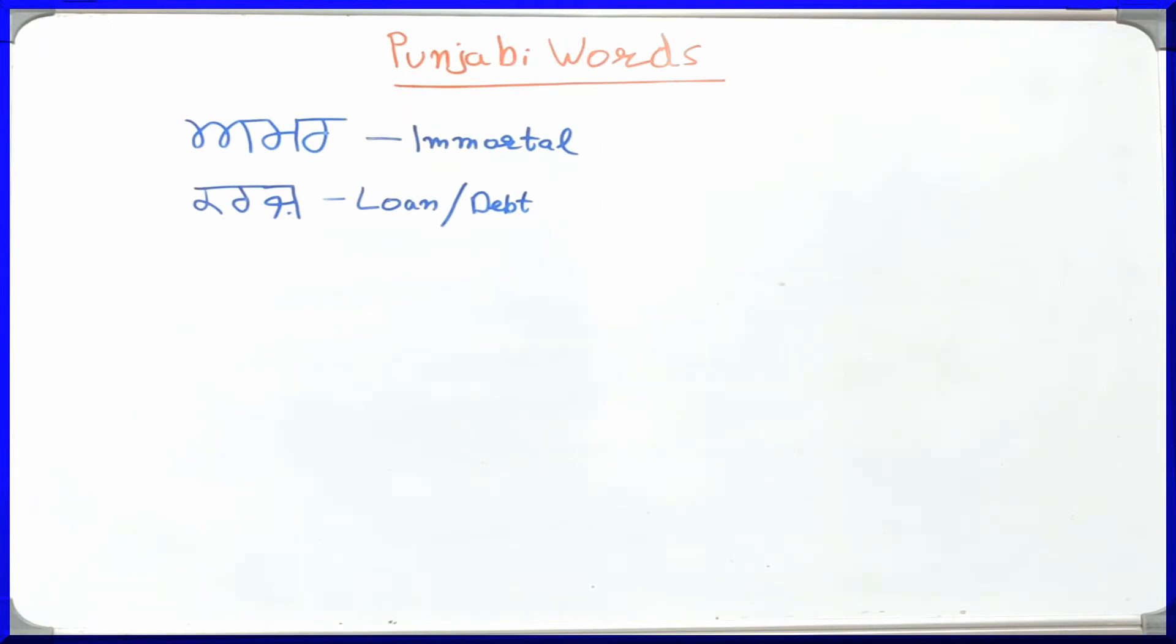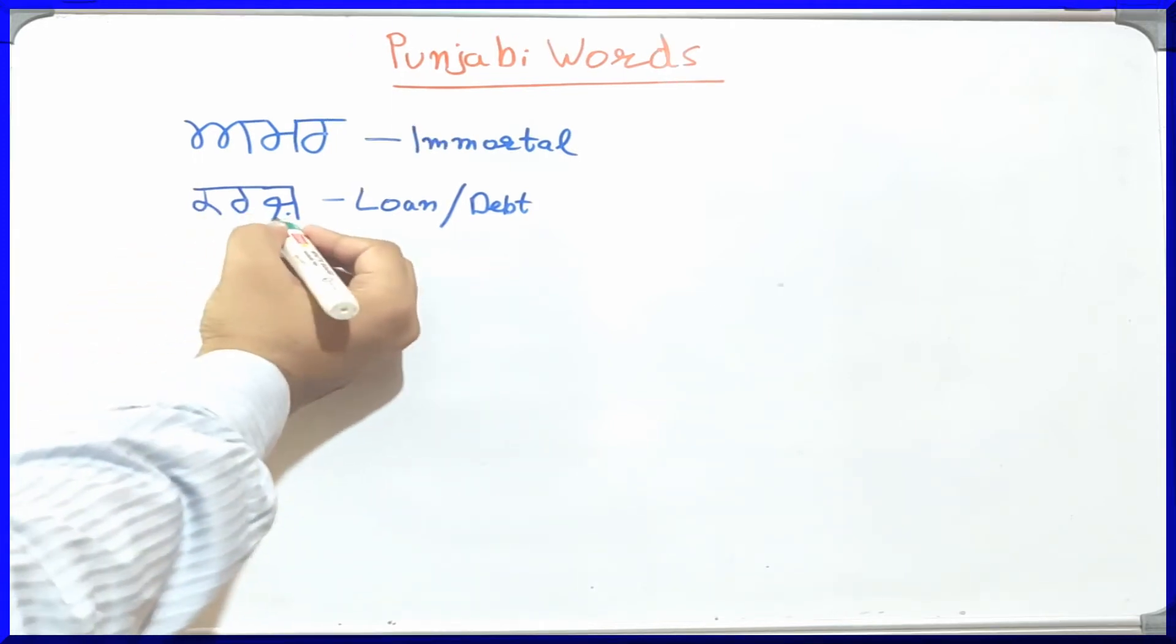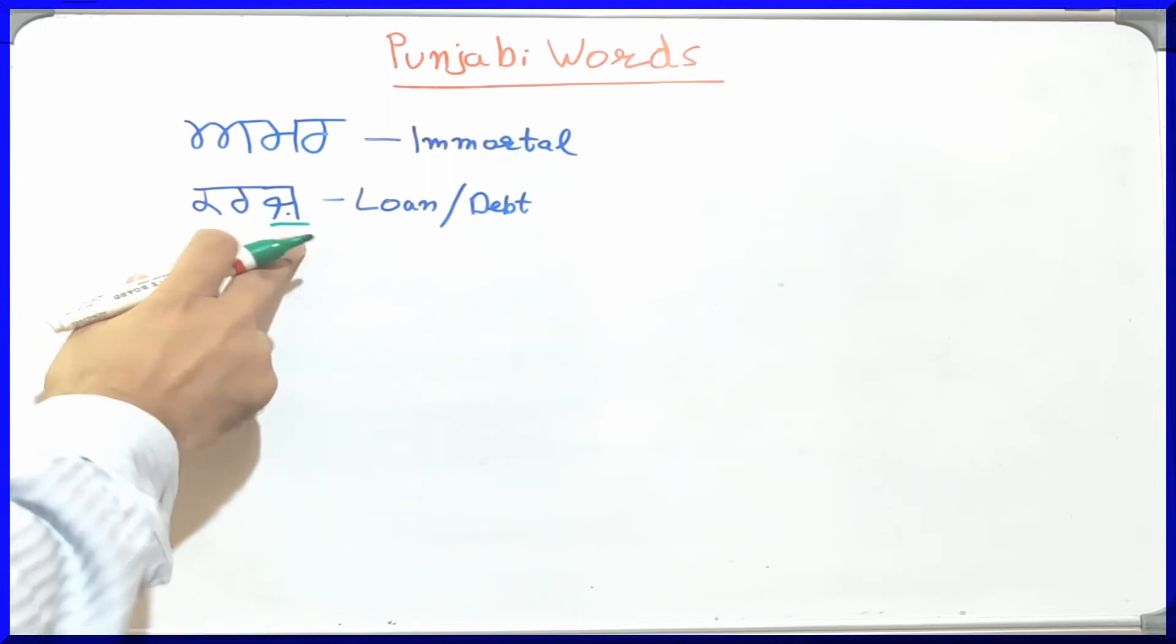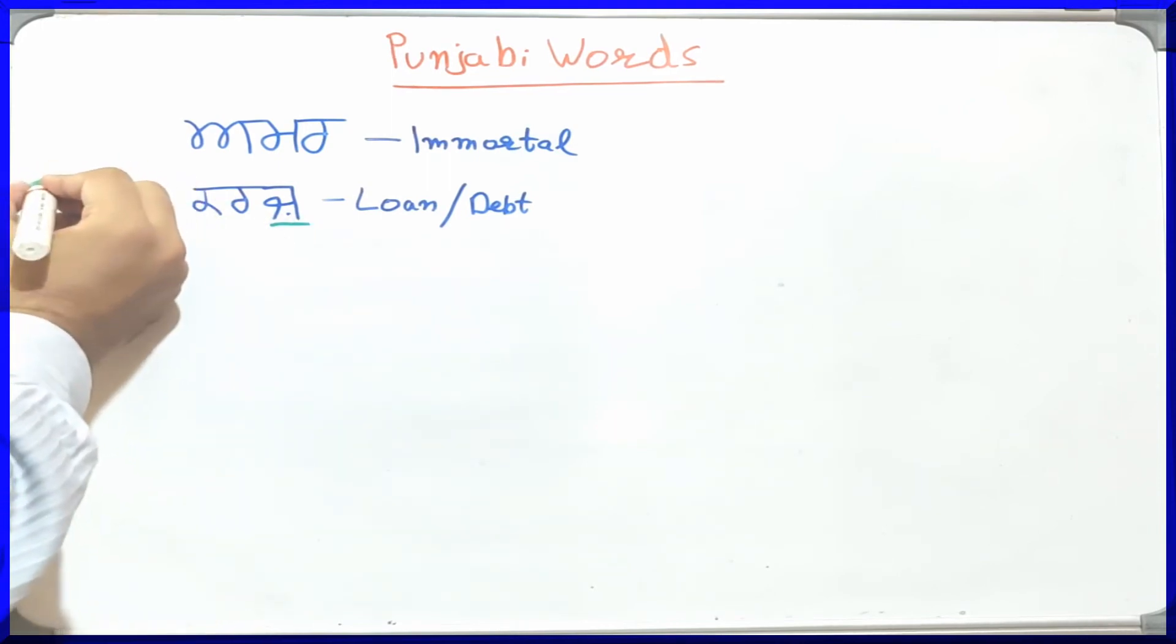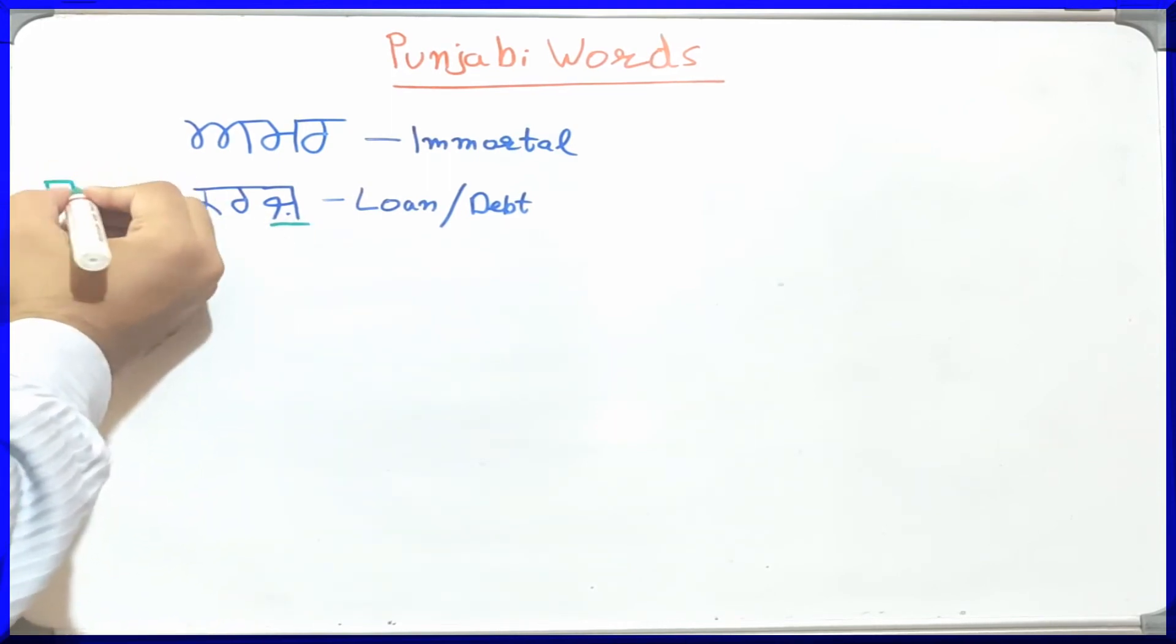One important point that I would like to discuss here is that in everyday conversation, most of the times the Punjabis do not use this letter. Instead of saying Karaz, they will say Karaj. So instead of using this Zaza, they will be using the other Jajja. They will say it in this way, without the dot.